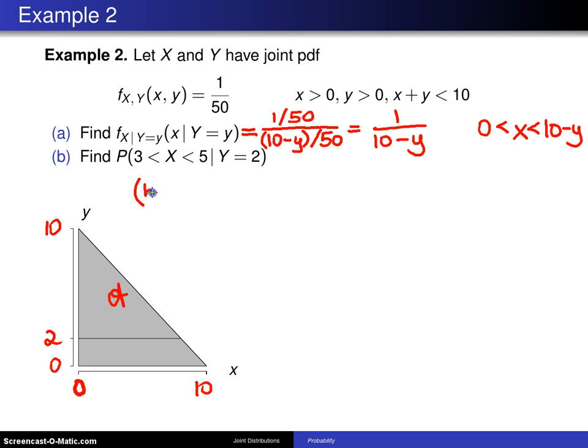Now for part b now that we're done with part a first of all I'm going to write down this probability density function the joint one with a specific value of y equals 2. So this is X given Y is equal to 2 and you simply plug y equals 2 into here. So it's 1 over 10 minus 2 which is 1/8. And this is for x values between 0 and 8.